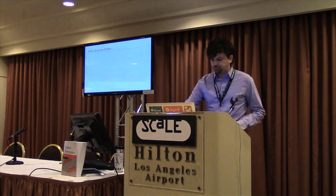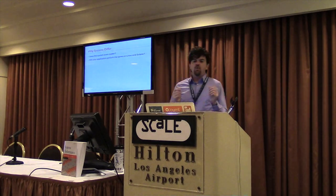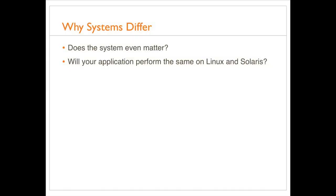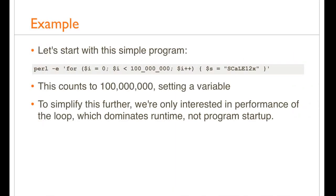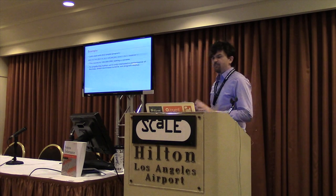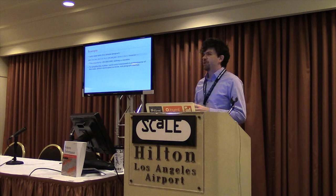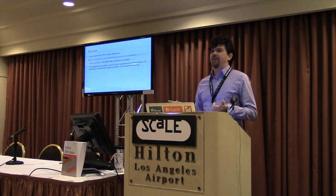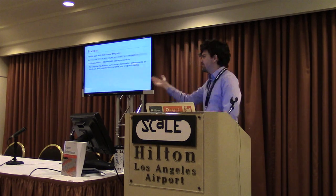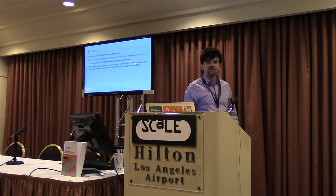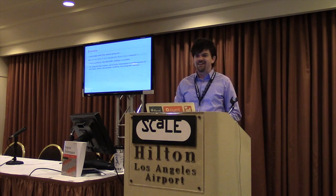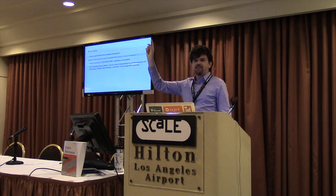So I'll start with why systems differ, and does the system even matter? Will your application perform the same on Linux and Solaris? To explain this I'll start with something really simple — a Perl one-liner that counts from 0 to 100 million and sets a string. We're only interested in the performance of the loop when it's running, not program startup. Would this differ between operating systems, or should it just go on CPU and run the same regardless of whether it's Linux or Solaris?